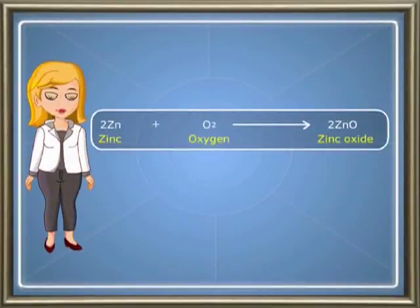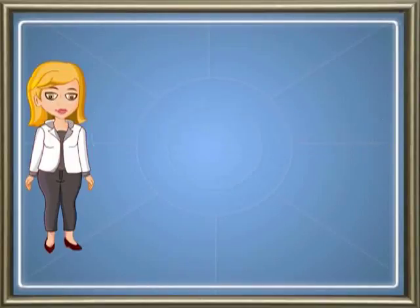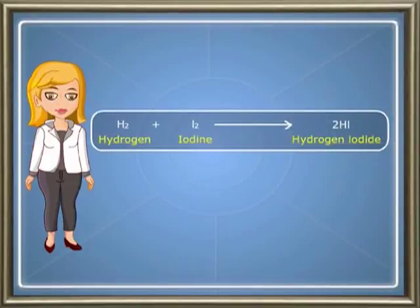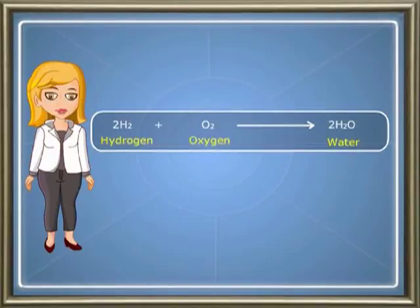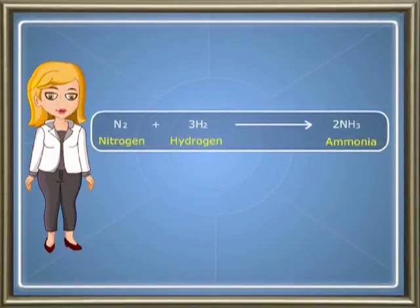When zinc reacts with oxygen, it gives rise to zinc oxide. When nitrogen reacts with oxygen, it gives rise to nitric oxide. When hydrogen reacts with iodine, it gives rise to hydrogen iodide. When hydrogen reacts with oxygen, it gives rise to H2O, that is water. When nitrogen reacts with hydrogen, it gives rise to ammonia.